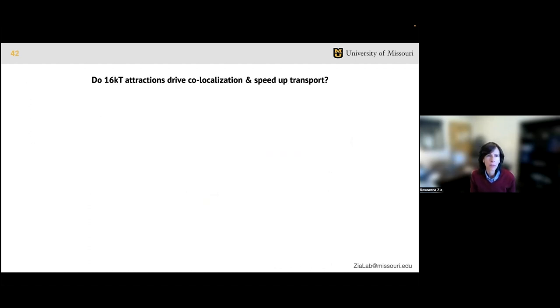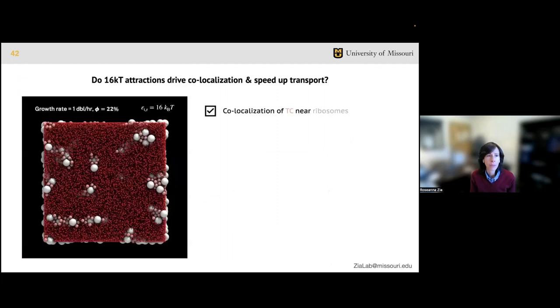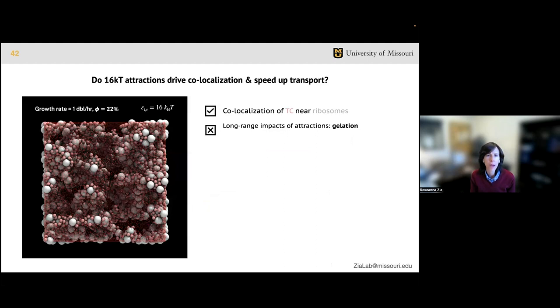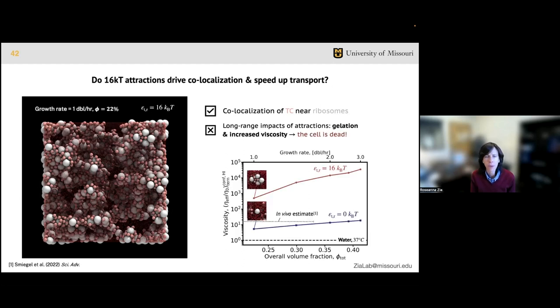Based on this information, we calculated the microscopic attraction strength to be about 16 kT, or about 39 kilojoules per mole. We then implemented this attraction strength as the well depth of the interparticle potential epsilon between ternary complexes and ribosomes in translation voxel simulations. As an initial model, we first assumed that the attractions are exerted isotropically over the entire molecule surface, meaning they don't depend on orientation. We want to test the hypothesis that these attractions can drive co-localization of translation molecules and thereby speed up the transport process. Looking at the case with 16 kT attractions, we do see that the ternary complexes in light red are co-localized near ribosomes which are gray. However, the attractions are also strong enough to cause the system to gel, which obviously would kill a cell.